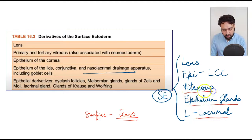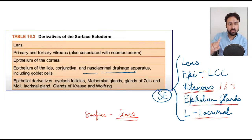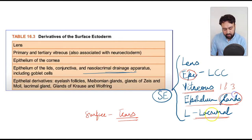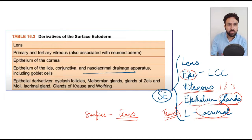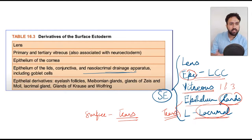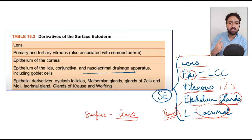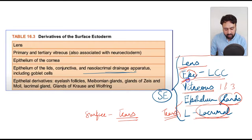In addition, you've got to remember that the primary and tertiary vitreous are derivatives of surface ectoderm — remember the secondary vitreous was a derivative of the neuroectoderm. One thing commonly asked is the lens, which is also a derivative of the surface ectoderm. If you remember the mnemonic LEVEL — L, E, V, E, L — that comes from surface ectoderm, it becomes very easy. These five structures are derivatives of surface ectoderm.